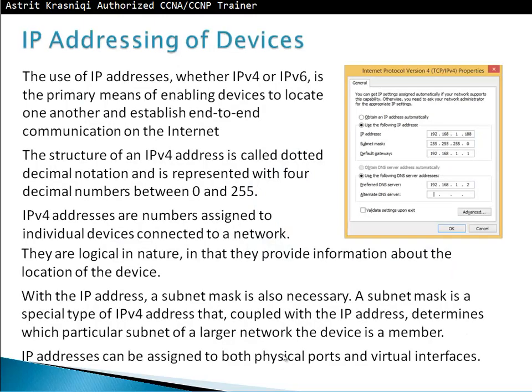IP Addressing of Devices. The use of IP addresses, whether IPv4 or IPv6, is a primary means of enabling a device to locate one another and establish end-to-end communication on the internet. IPv4 addresses are numbers assigned to individual devices connected to a network. They are logical in nature in that they provide information about the location of the device.